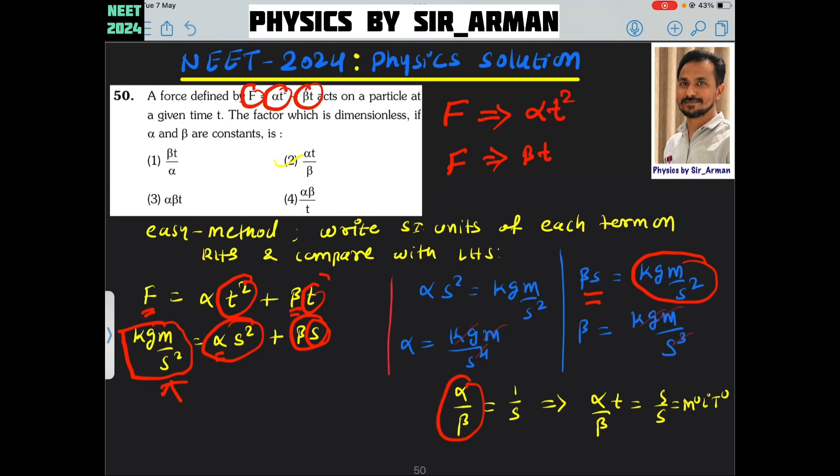Now I am just taking the ratio alpha by beta because I do not know which one is the correct one. So alpha by beta you will get 1 by S because here fourth power, it has 3 power. So 1 by S.